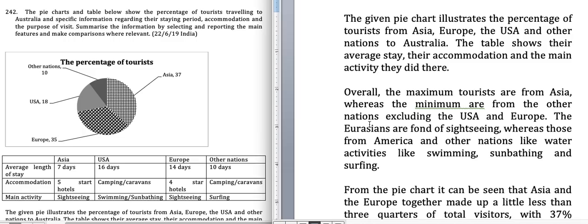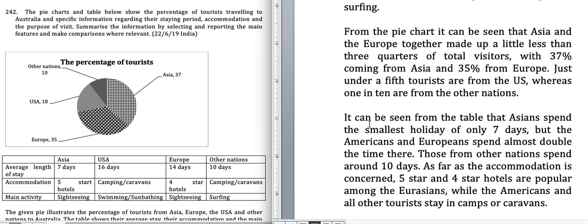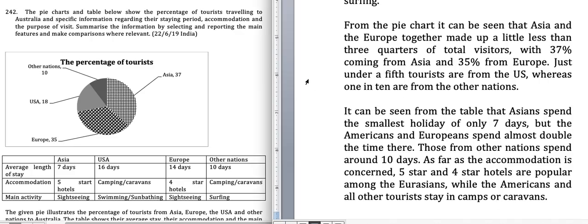Now the main body: one paragraph for the pie chart and one for the table. From the pie chart it can be seen that Asians and Europeans together make up a little less than three quarters of the total visitors.